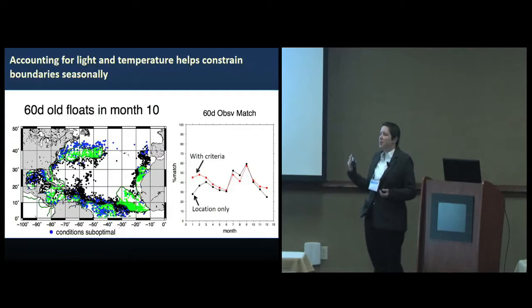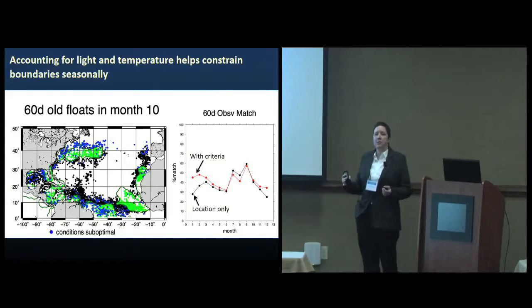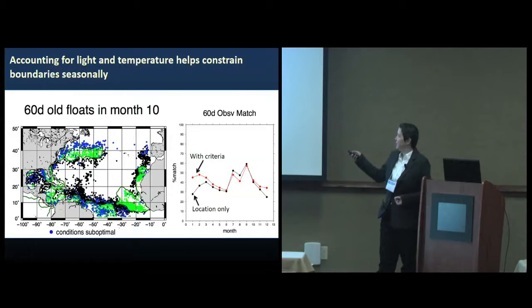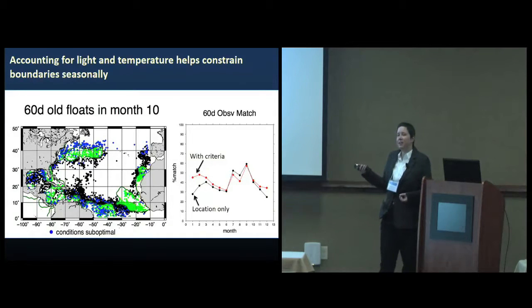So then I start thinking about the physiology of the sargassum. In this figure, it's identical to the previous one, but I've just colored the particles in blue that are in conditions of light or temperature that are suboptimal for sargassum growth. When I do that, you can see I get a pretty nice increase in the match percent, but only in the wintertime when the physical control is weak. I can get an annual average of about 40 percent match with observations just by doing this crude accounting.